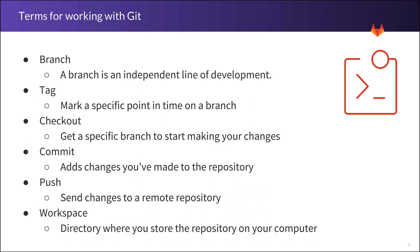Typically, the main branch for a project is a special branch called master that may be protected against changes by anyone that is not authorized to do so. A tag lets you name, or version, a specific point in time on a branch, even on master. This allows you to create a point in time like v1.0 and mark the code at that point.